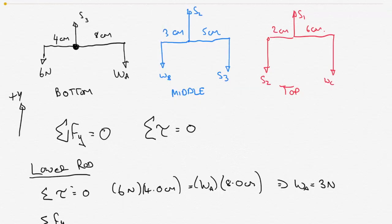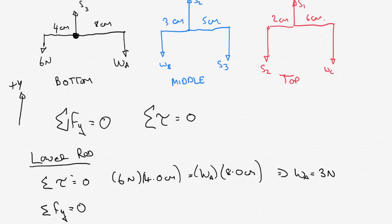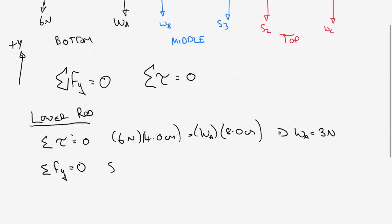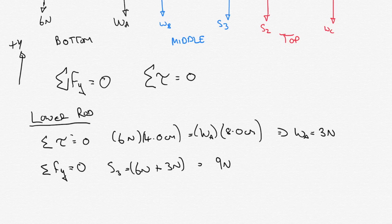Now the sum of the forces in the y direction is also equal to zero. In the upward direction we have S3, and that's going to equal 6 newtons pulling downward on the left plus 3 newtons pulling down on the right, giving a total of 9 newtons for S3. So the lower rod is now solved: WA is 3 newtons and the tension in string S3 is 9 newtons.